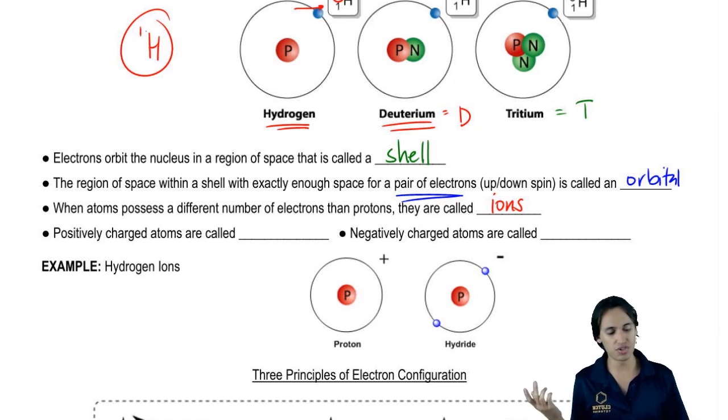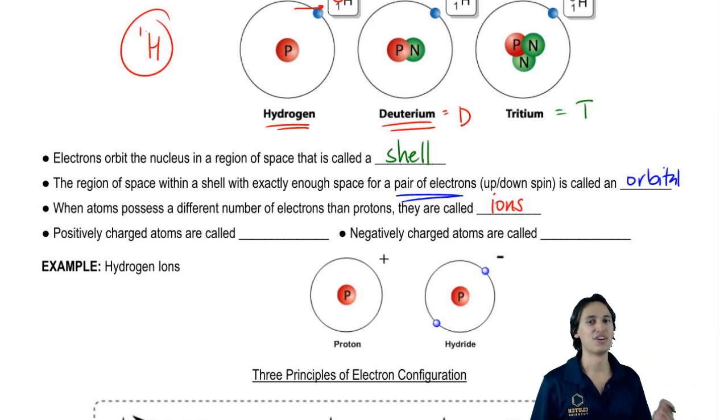So remember there's two kinds of charges you could have. You could have a positive or a negative. You guys should be able to fill this in. What is it called when it's a positively charged atom? That's a cation.